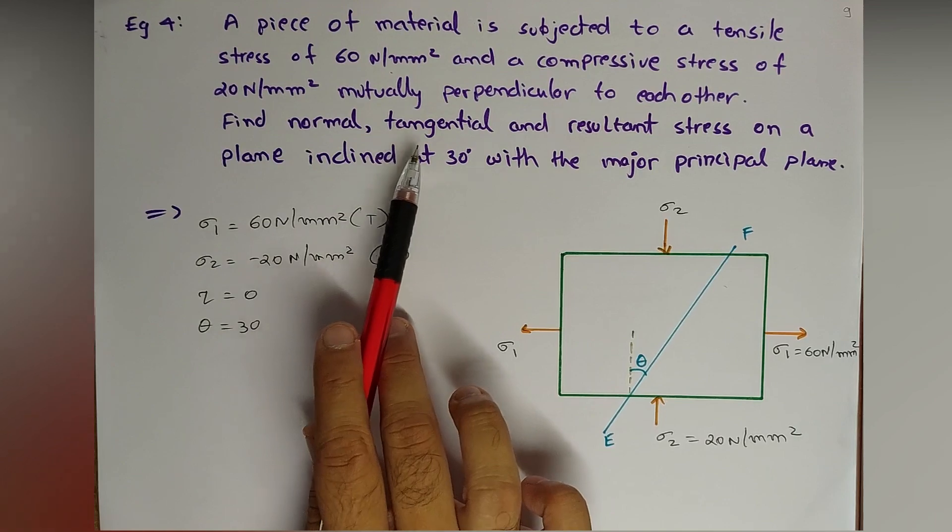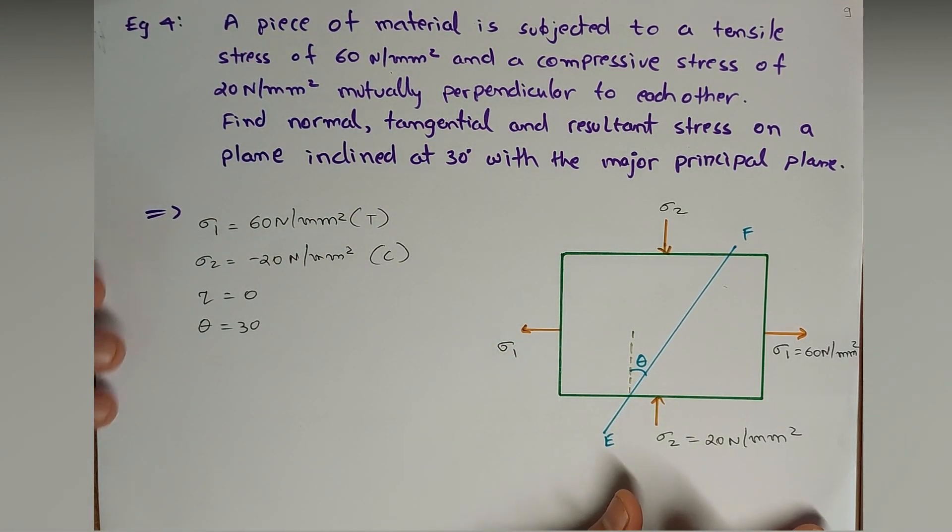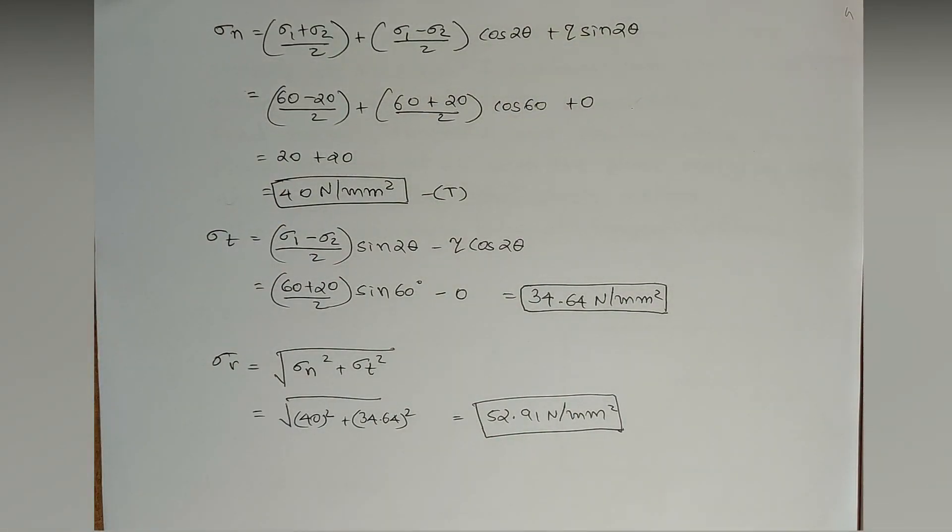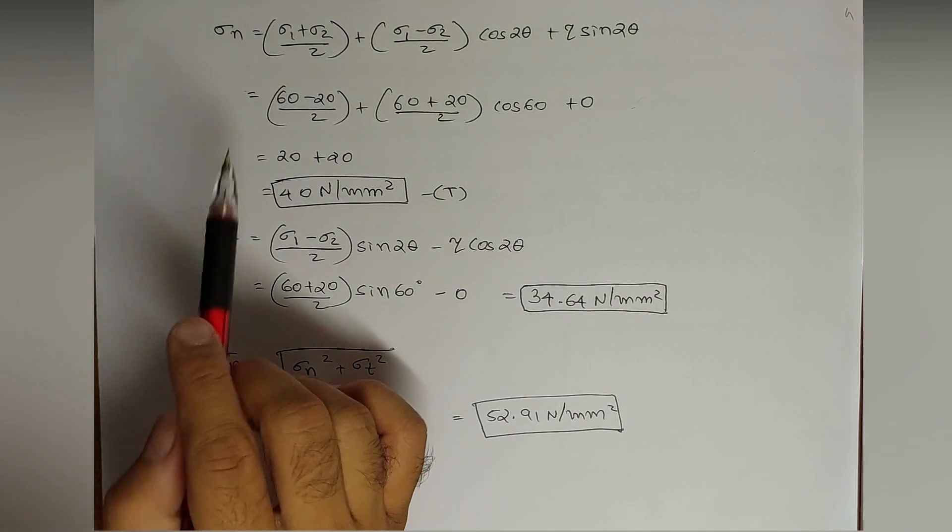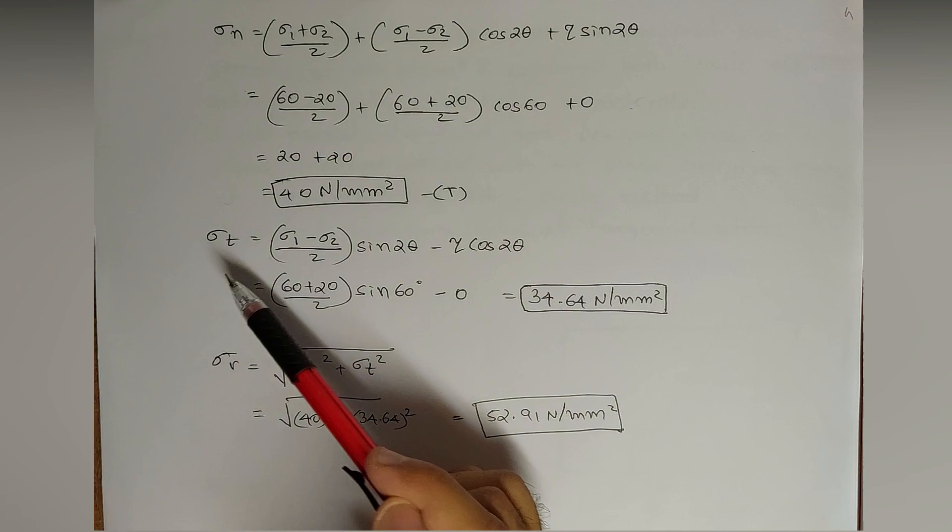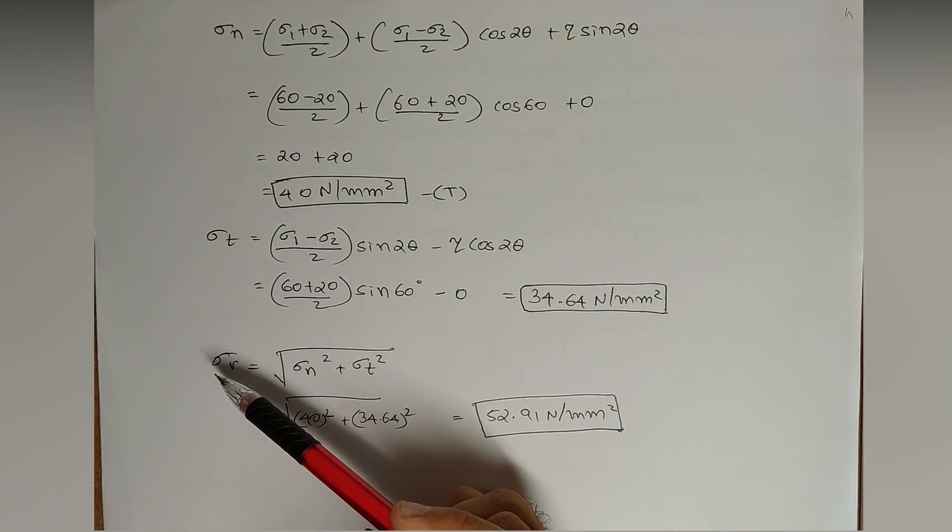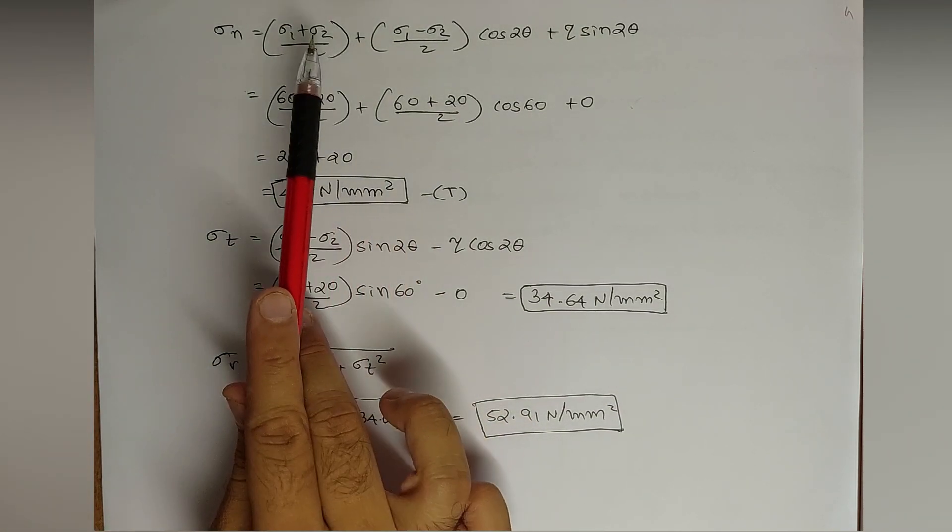Based on this, we'll find normal, tangential, and resultant stresses by the formula. This question is actually similar to that of question number 1 or example number 1: sigma_n, sigma_t, sigma_r. Only these three things are required, so we are writing the formulas.